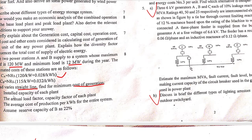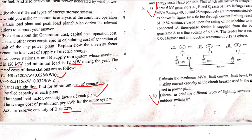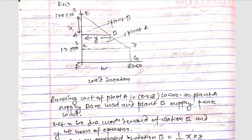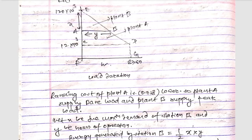Find: first, the installed capacity of each plant; second, the annual load factor and capacity factor for each plant; and third, the average cost of production per kilowatt hour for the entire system. The reserve capacity of station B is assumed as 22% of the system.